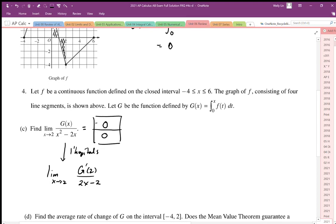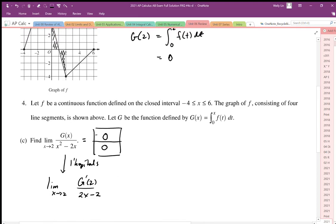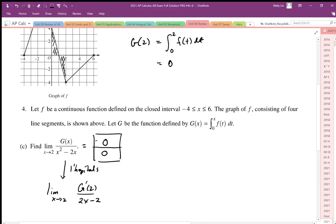Once I've applied L'Hopital's the first time, I can now evaluate. So in this case now, I want to know the slope of the g function at 2. I'm just going to do this in a different color. So g prime at 2 is equal to the f value at 2. Well, the f value at 2 looks to be negative 4.